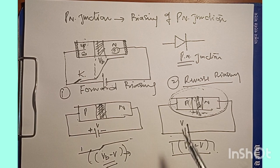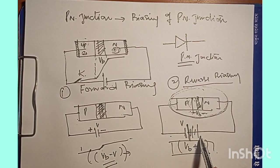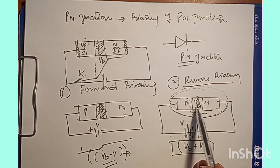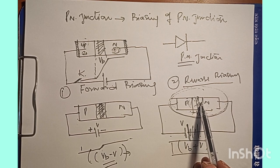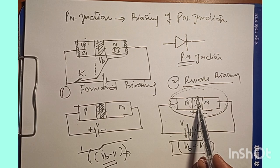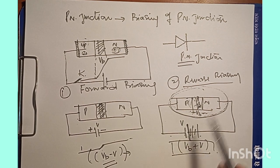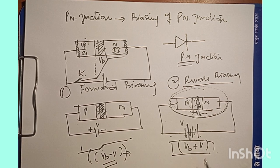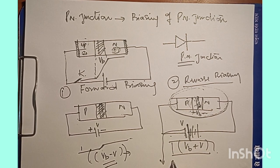If the reverse bias is increased to a very high voltage, the covalent bonds near the junction break down and a large number of electron-hole pairs are liberated. Thus, the reverse current increases abruptly — there is a sharp rise in reverse current to a very high value. This phenomenon is called breakdown, and the value of reverse voltage at that point is called the breakdown voltage.